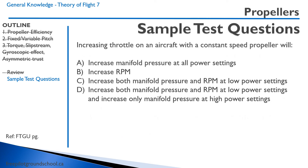Practice question: Increasing throttle on an aircraft with a constant speed propeller will — Option A: increase manifold pressure at all power settings — correct. Option B: increase RPM — not correct, it's the prop control that increases RPM, not the throttle. Option C: increase both manifold pressure and RPM at low power settings — correct because the propeller is at the low-pitch stop. Option D: increase both manifold pressure and RPM at low power settings, and increase only manifold pressure at high power settings — this is the most correct answer, so D is correct.